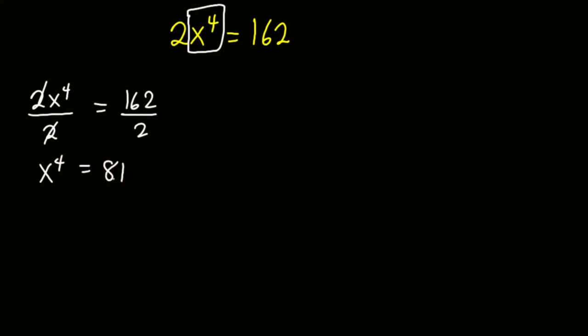For every equation, the exponent of the variable determines the number of its values. Since the exponent of x is 4, it means that the values of x must be 4. So how do we get these four values?